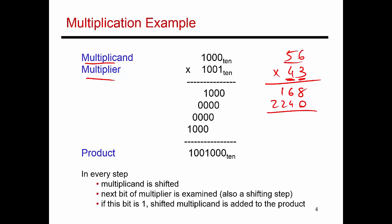And then you add both of these up, and it gives you 8, 0, 1, 4, 2. So that's the answer of 56 times 43.